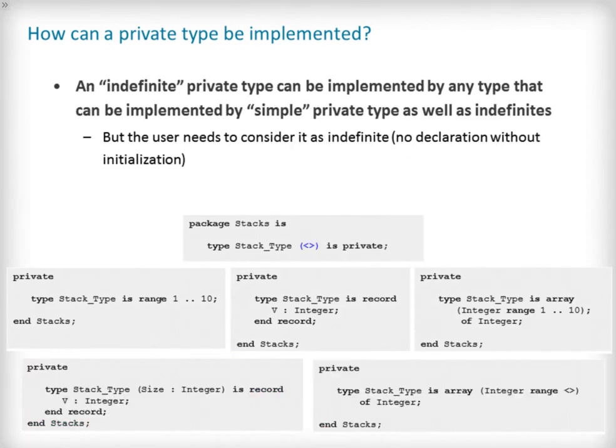An indefinite private type can be implemented by a superset of the permitted implementations of simple private types. This means indefinite private types can be implemented using numerical ranges, records both discriminated and non-discriminated, and constrained and unconstrained arrays.